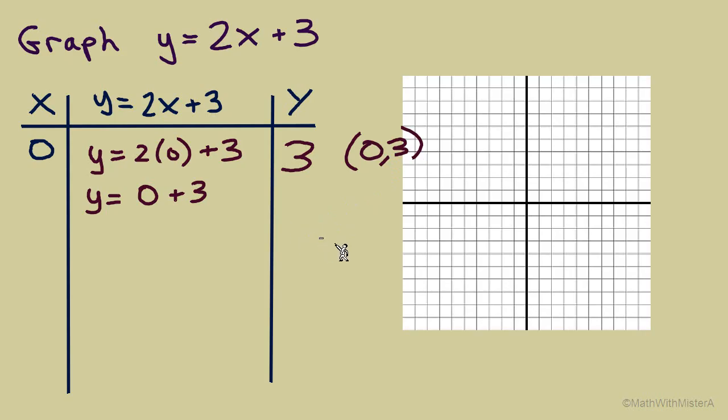If we plot 3 points and they don't line up in a straight line, we'd know that we made a mistake somewhere in our table. But if we only find 2 points and connect those 2 points with a line, there's no way to quickly see whether or not we made an error in our work. So 3 points is just my habit to make sure that I'm finding my points accurately.